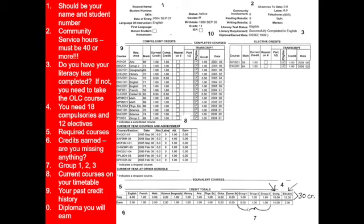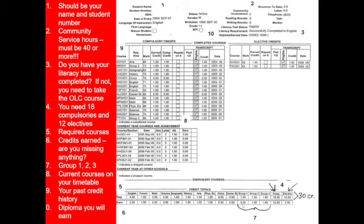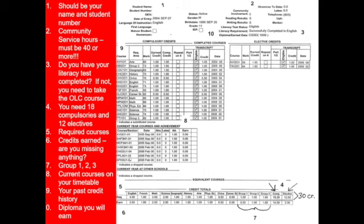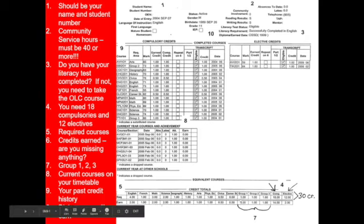You have to start asking yourself, do I have a plan for what's missing? Group One requires you to take an additional English on top of the four — so perhaps Writer's Craft, a language, Social Science and Humanities, Canadian and World Studies, Guidance and Career Ed, or co-op. Go up to section eight — these are the current courses you're taking — and ask whether any of them satisfy what you're missing. For Group One, a CHW course (history) would satisfy it. Once this student completes that course, they'll have their Group One requirement.